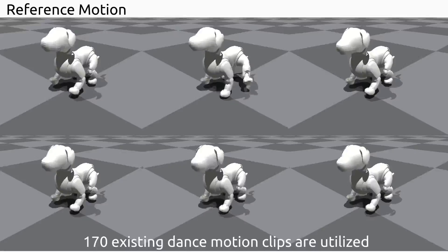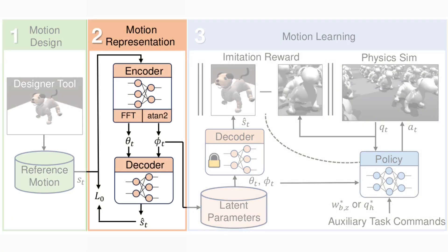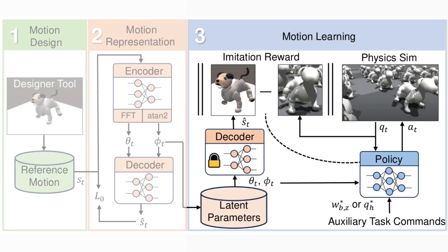Next is the motion representation part. DFM encodes the offline dance motions with an auto-encoder-like structure featuring layers that perform FFT, generating natural transitions. Third, the motion learning part uses reinforcement learning to imitate the represented dance motions while following additional tasks.